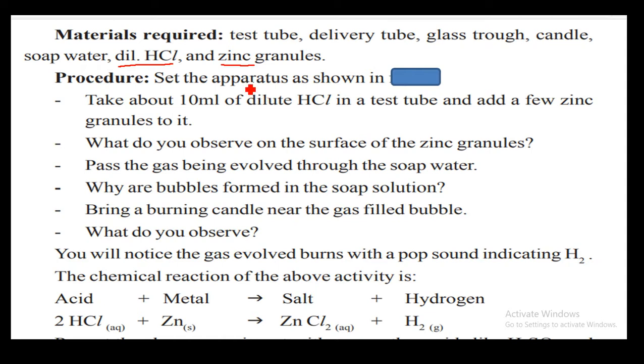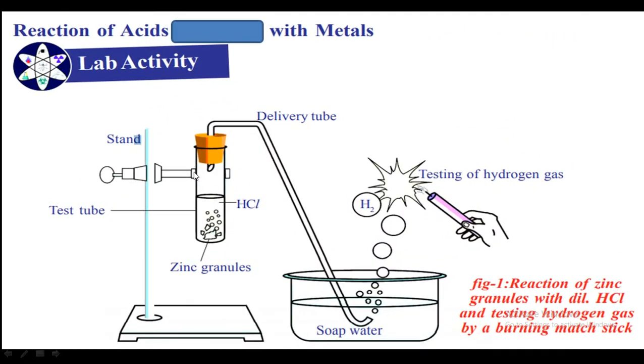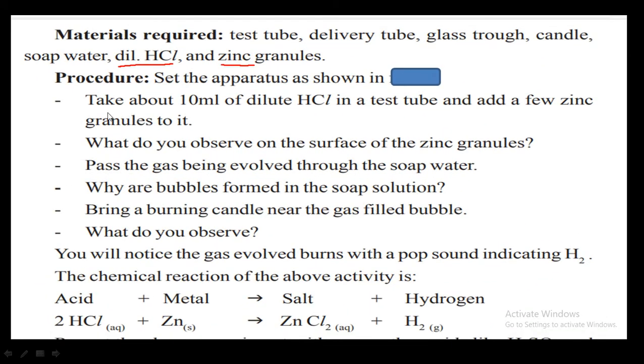Set up the apparatus as shown. Now, first take 10 ml of dilute HCL in a test tube and add a few zinc granules. We observe that a gas is produced in the test tube. Pass the gas being evolved through the soap water.